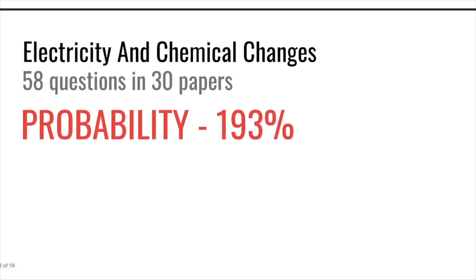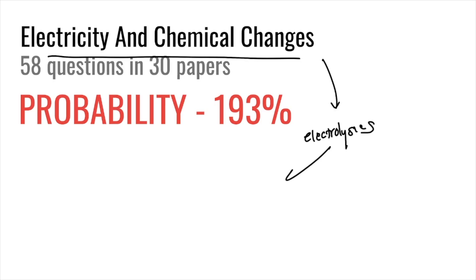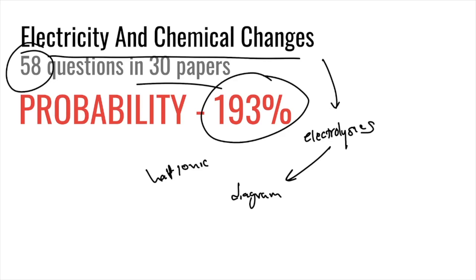Electricity and chemical changes is essentially electrolysis, with a probability of 193% — almost two questions per paper. They usually give you a diagram and ask you to name the anode and cathode, write half ionic equations, and identify which diagram is correct. These questions usually appear in the middle of the paper.